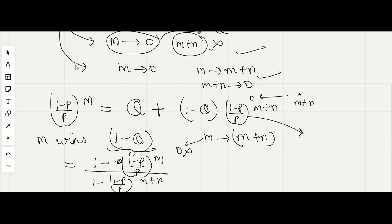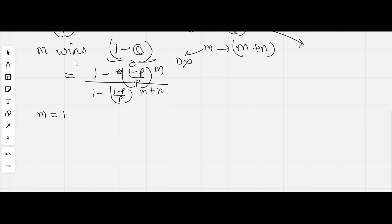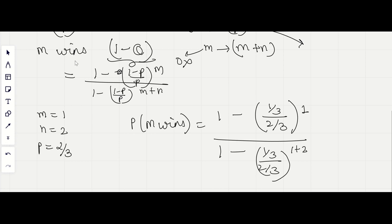Now in our question, m is 1, n is 2, P is equal to 2/3. So our probability that M wins would be [1 - (1/3)/(2/3) to the power 1] / [1 - (1/3)/(2/3) to the power 1 plus 2]. So this comes out to be 4/7. And this is our answer.